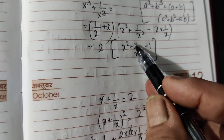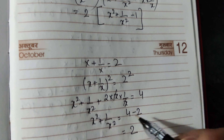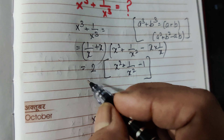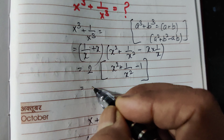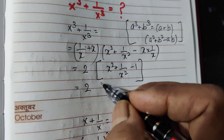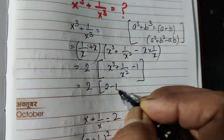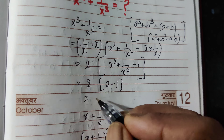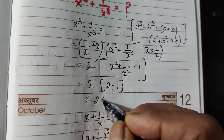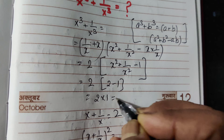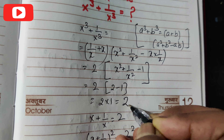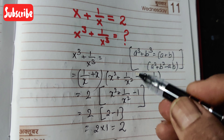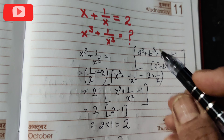Now, x square plus 1 by x square equals 2. Putting the values in: x cube plus 1 by x cube equals 2 multiplied by 2 minus 1, which equals 2 into 1, equals 2. So x cube plus 1 by x cube equals 2.